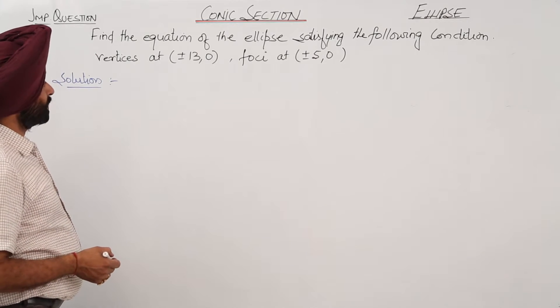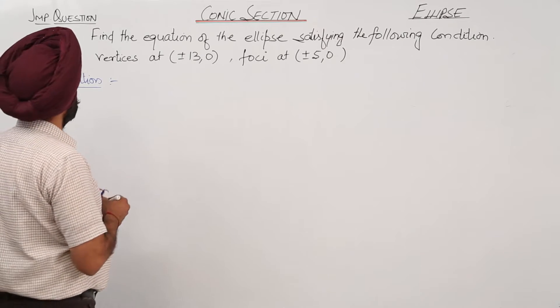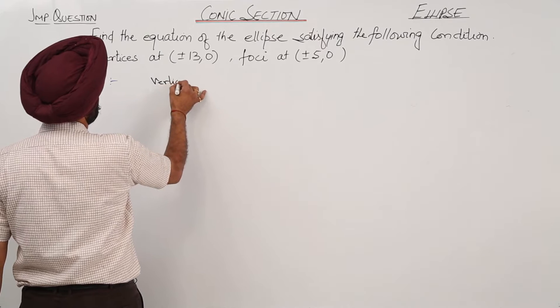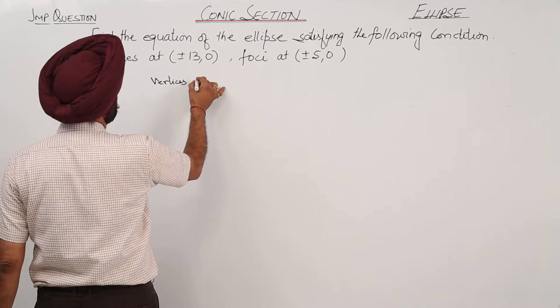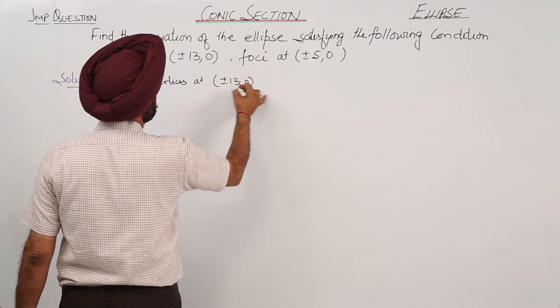Find the equation of the ellipse satisfying the following conditions. We are given vertices and foci. Now, vertices at plus minus 13 comma 0.